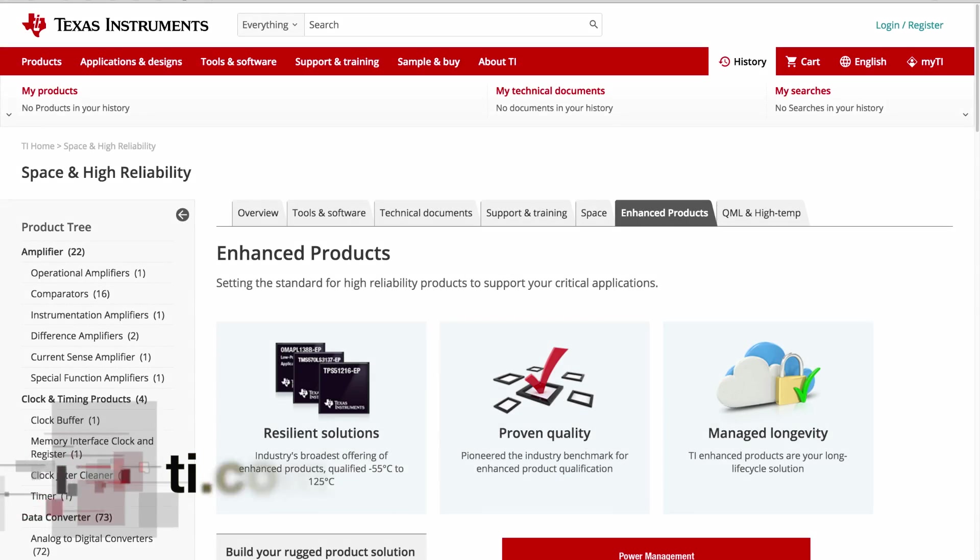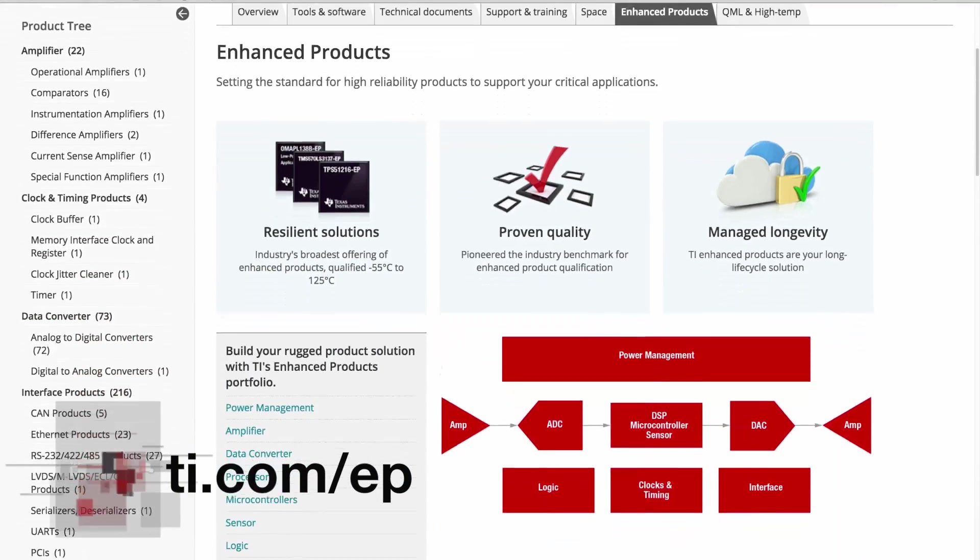To get your design started, visit our product search or key resources page. If you'd like to know more about the qualification flow, key benefits, or differentiation of our EP portfolio, check out our website and training videos on the Space and High Reliability portal. Thank you for your time and let us know how we could help with your design.